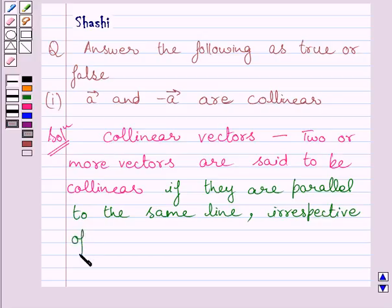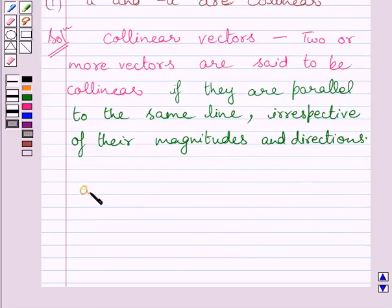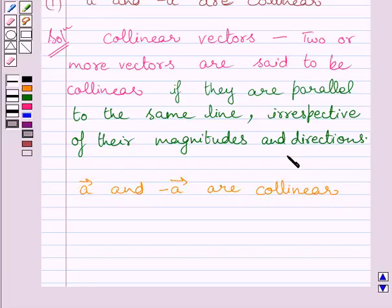Now, the given statement is A vector and minus A vector are collinear. We have to find if this statement is true or false. Clearly, these two vectors are negative of each other, or we can say these two vectors have same magnitude but opposite direction.